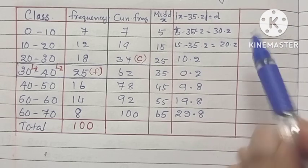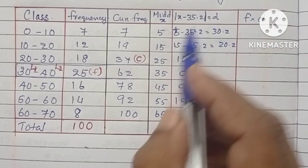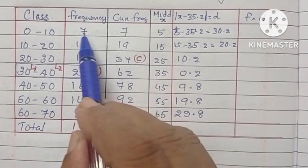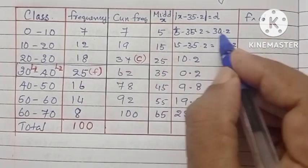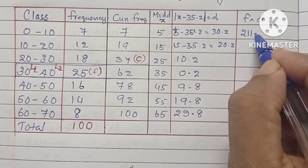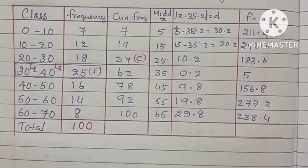After that, we have to find the product of F into D. F means the frequency and D is the value which we got now. Then we are finding each value. After that, we are adding all the values. We will get 1314.8.